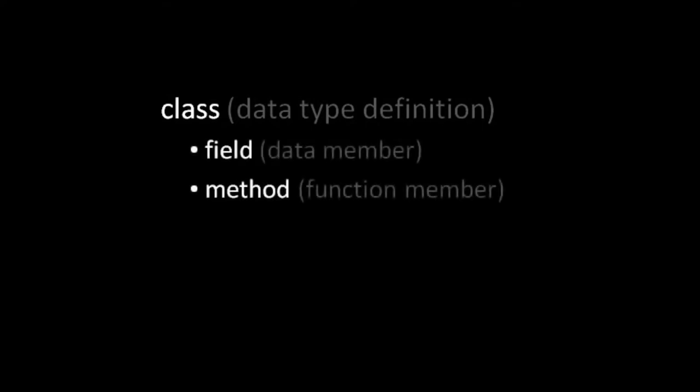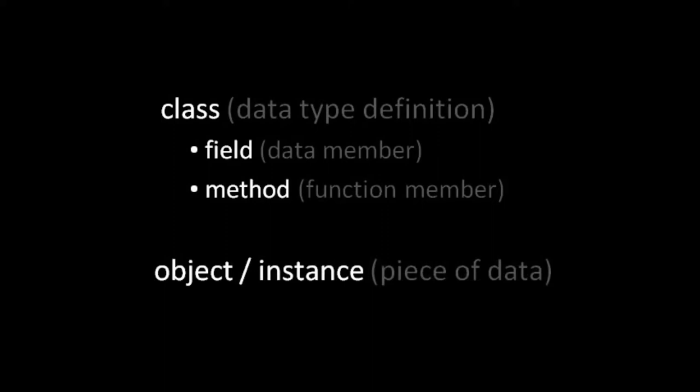As an object-oriented language, the core concept in Java is what's called a class. A class is a data type definition very much like a struct in C. The key difference is that classes are comprised of not just pieces of data — called the fields — but also functions, which are called methods in this context. A class is essentially a blueprint for a composite piece of data, and these pieces of data are called objects or instances. When we create a new object, we say we are instantiating a class.